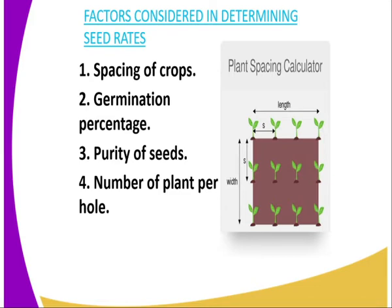The second factor is germination percentage. If the germination percentage is 100%, it means that a lower seed rate will be used because each and every seed is viable for germination. And if the percentage of germination or germination potential is low, it means that you will be using a lot of seeds, resulting in a high seed rate.